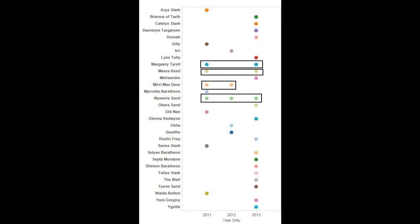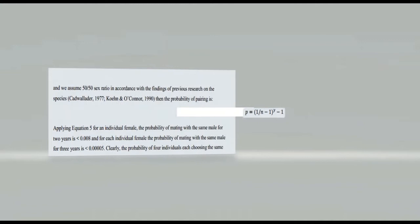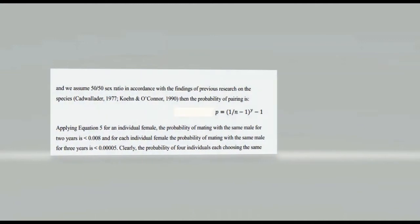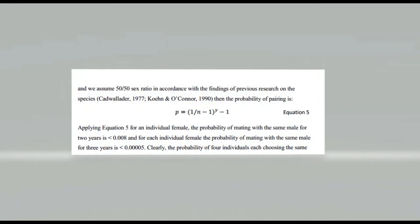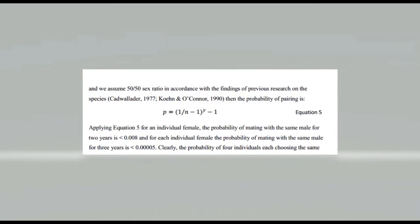One of these had mated with the same male for three years in a row. Probability calculations show that this repeated pairing is not random. Furthermore, the chance of this happening randomly is reduced from what we might expect in a system untainted by human interference.